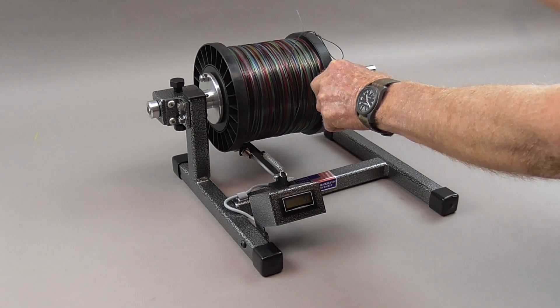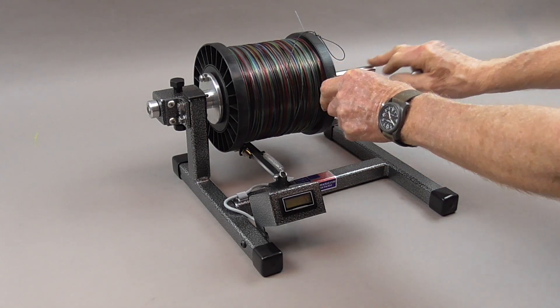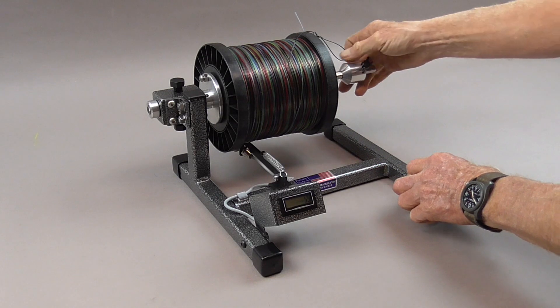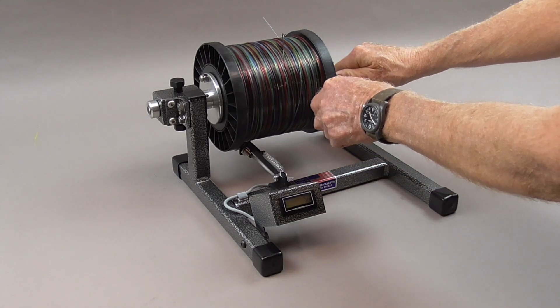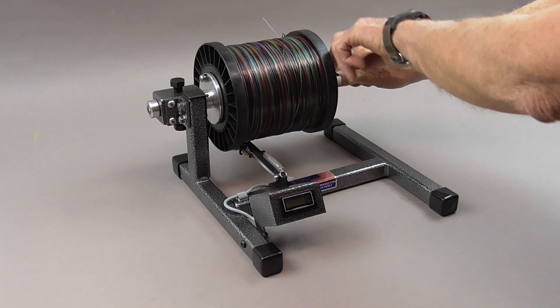Put your supply spool on, put the cone on, slide it in there and make sure everything is engaged. Push tight. Tighten down the T-screw.